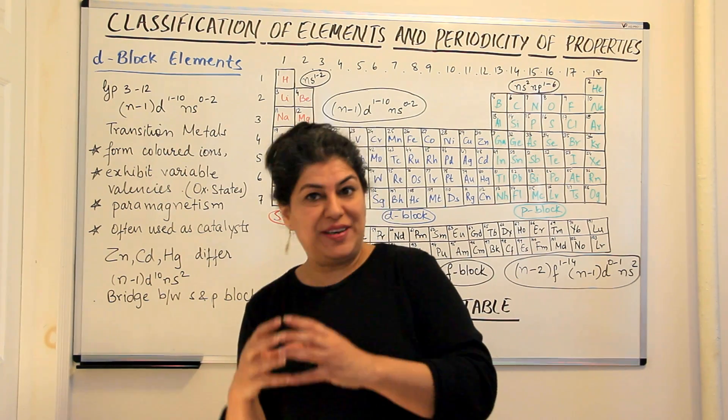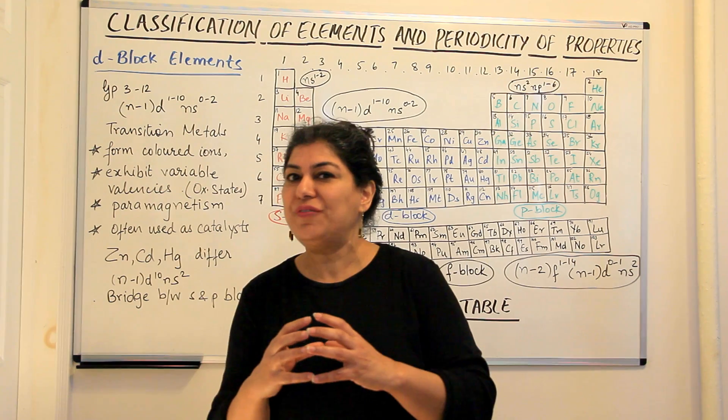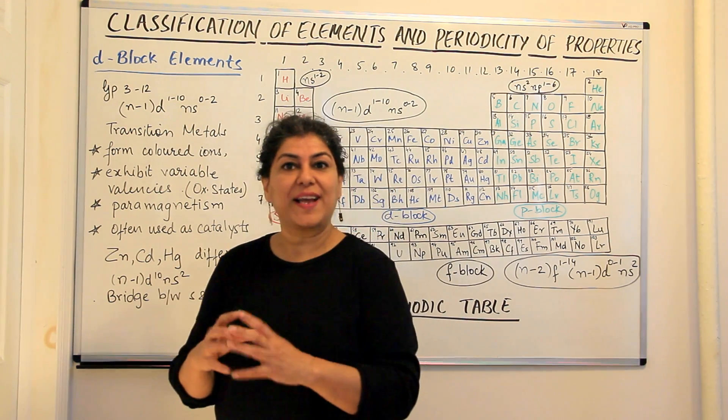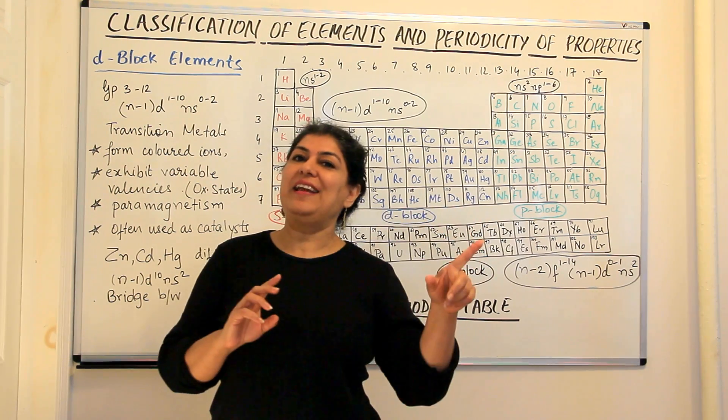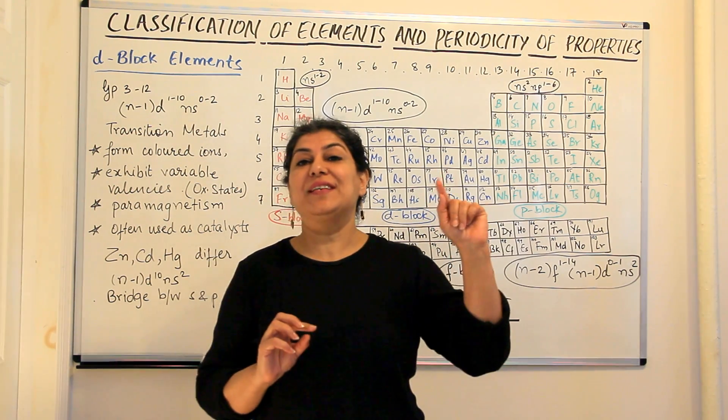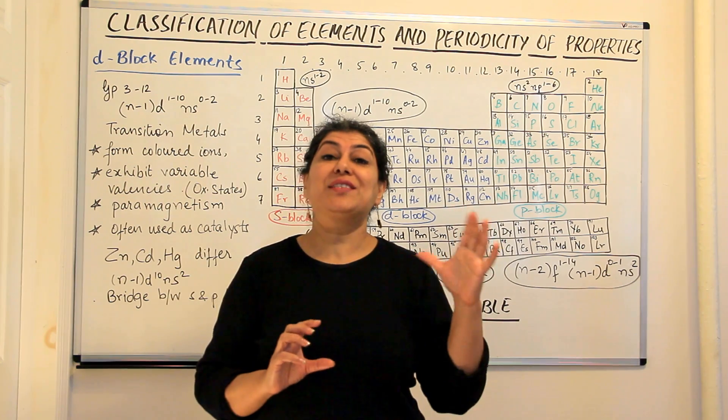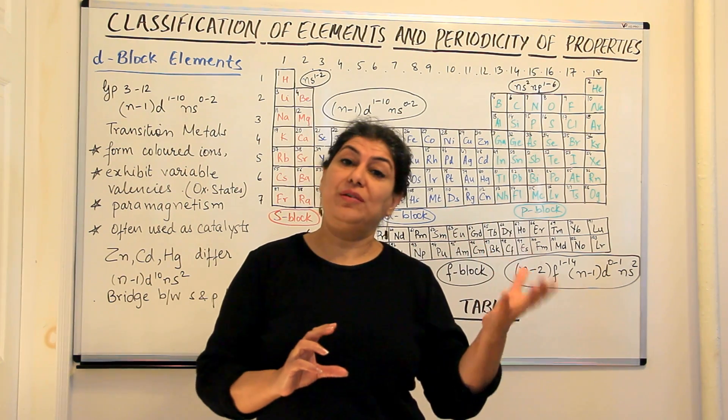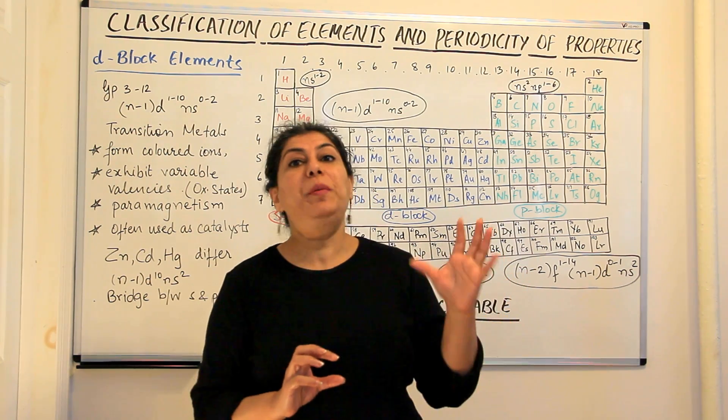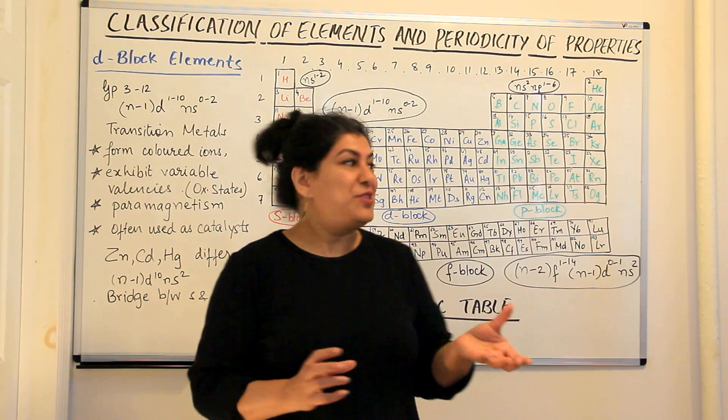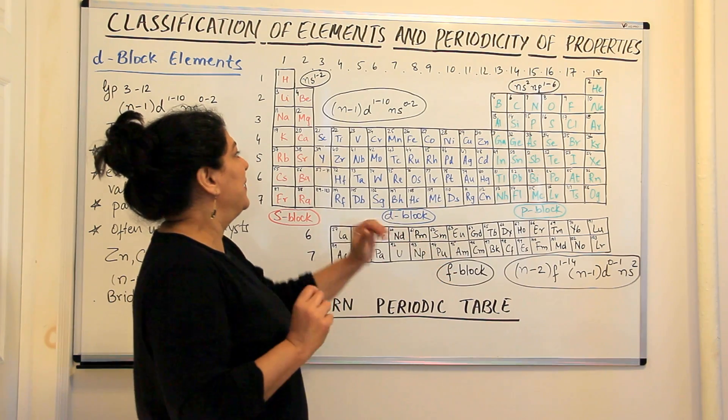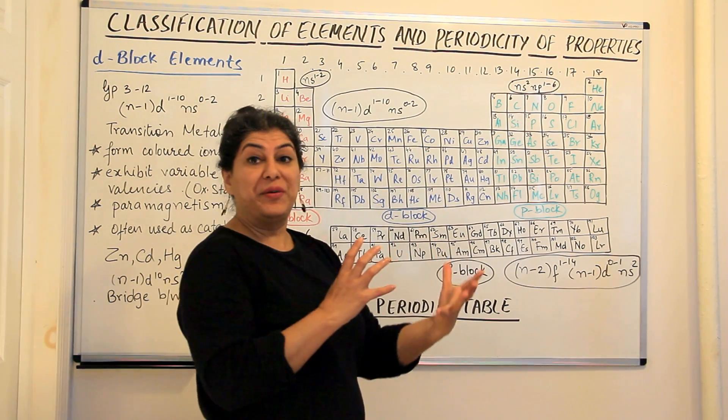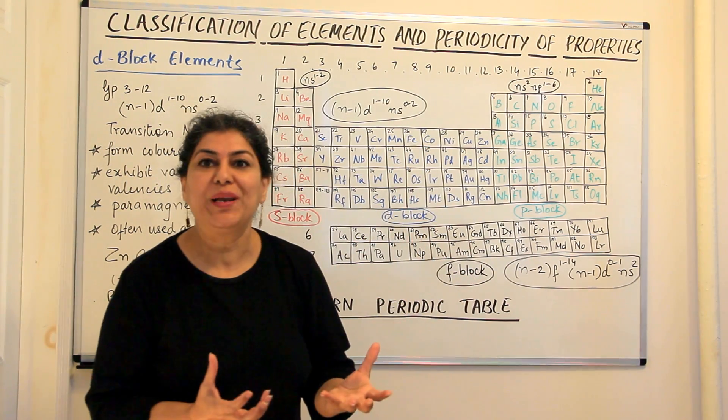For example, if you have a ferrous ion which is a Fe2+ ion, a compound having a ferrous ion would be greenish in colour. And Fe3+ ion, that is iron with a 3 positive charge is known as the ferric ion. A compound which contains ferric ion would be brown in colour. Manganese would be pink, it would be fleshy pink or a darker pink. Nickel would again be green, copper compounds would be blue in colour.